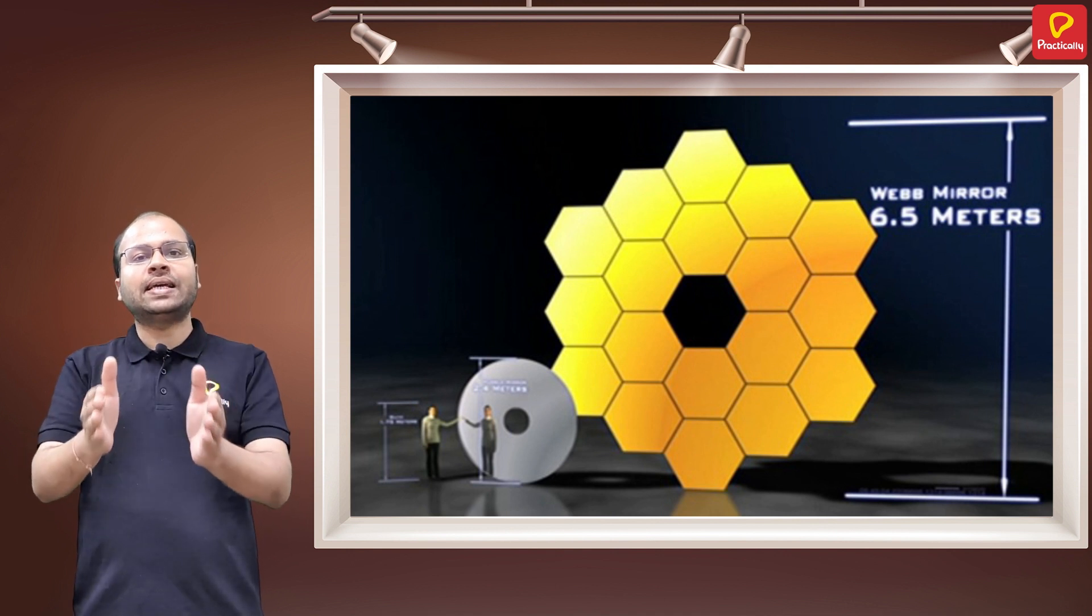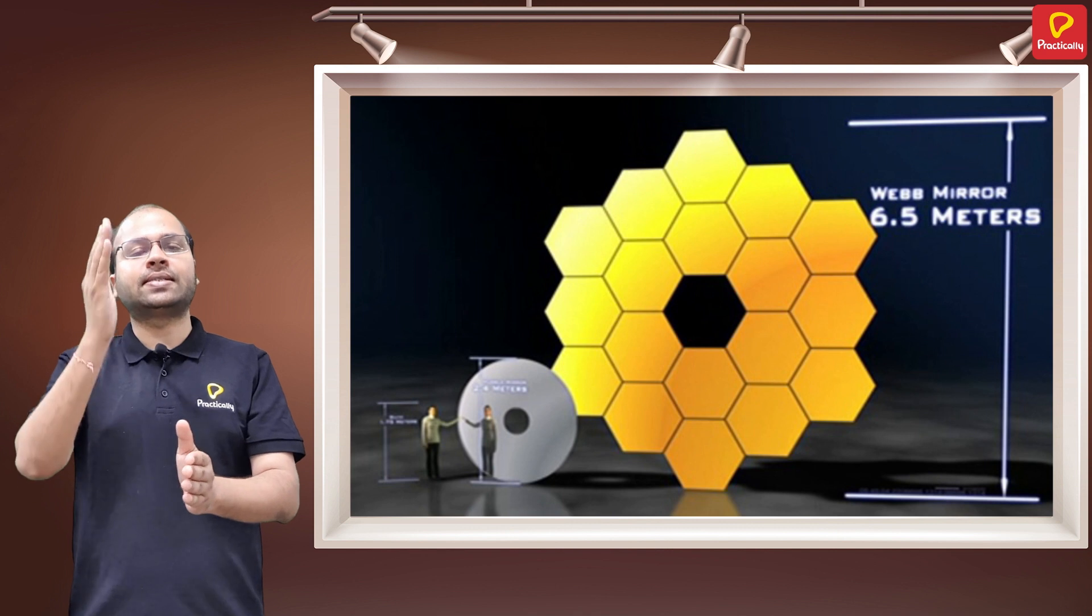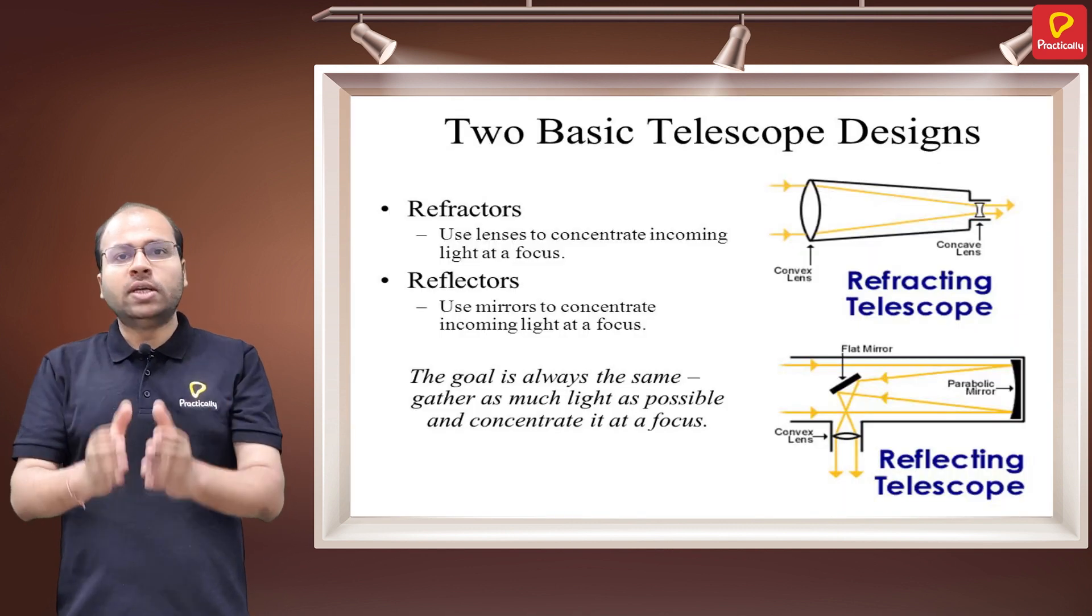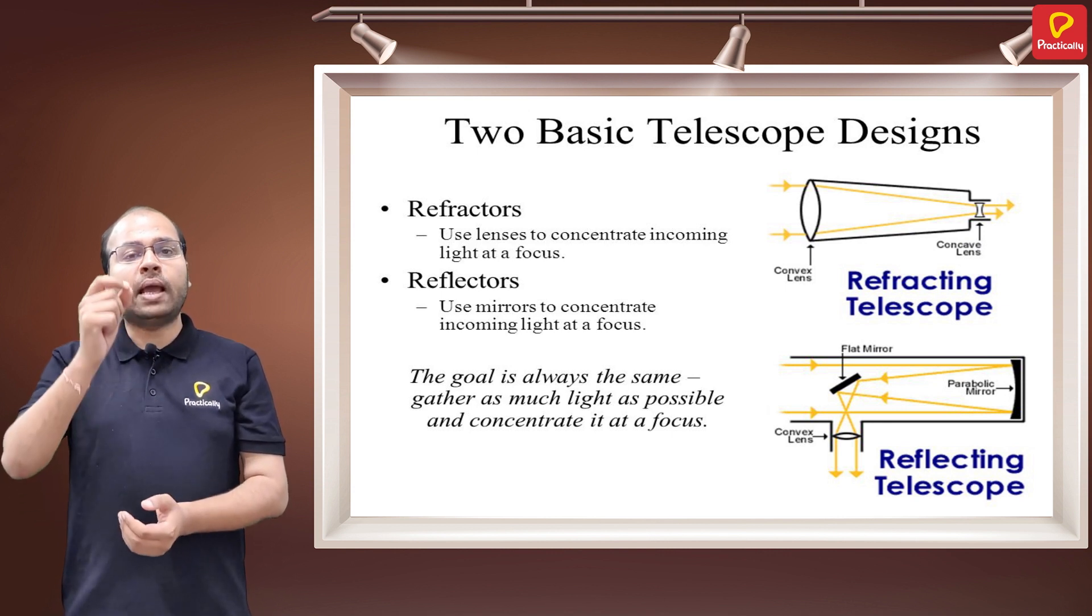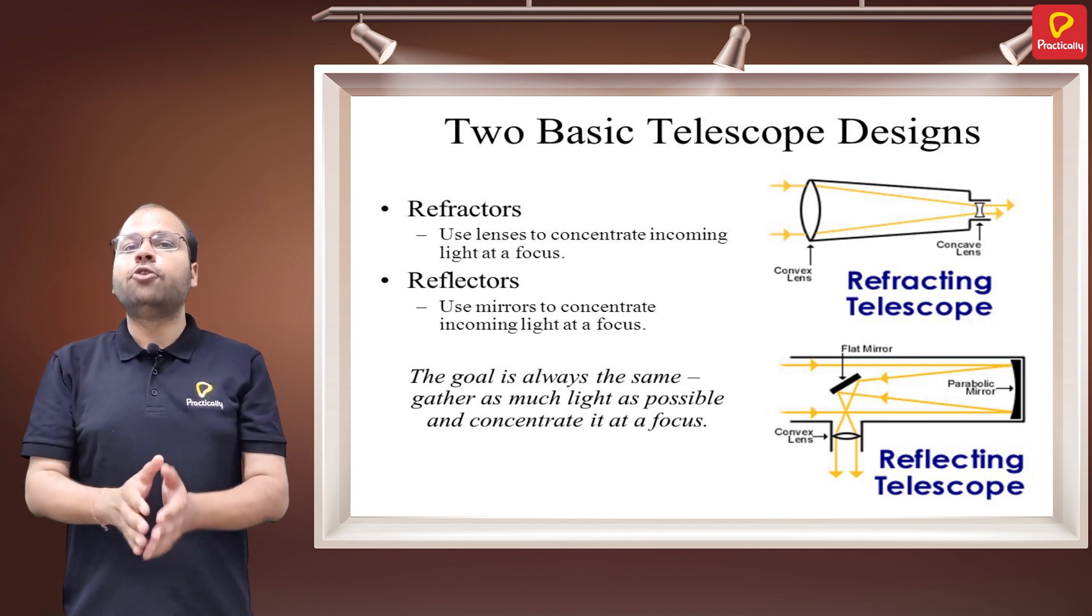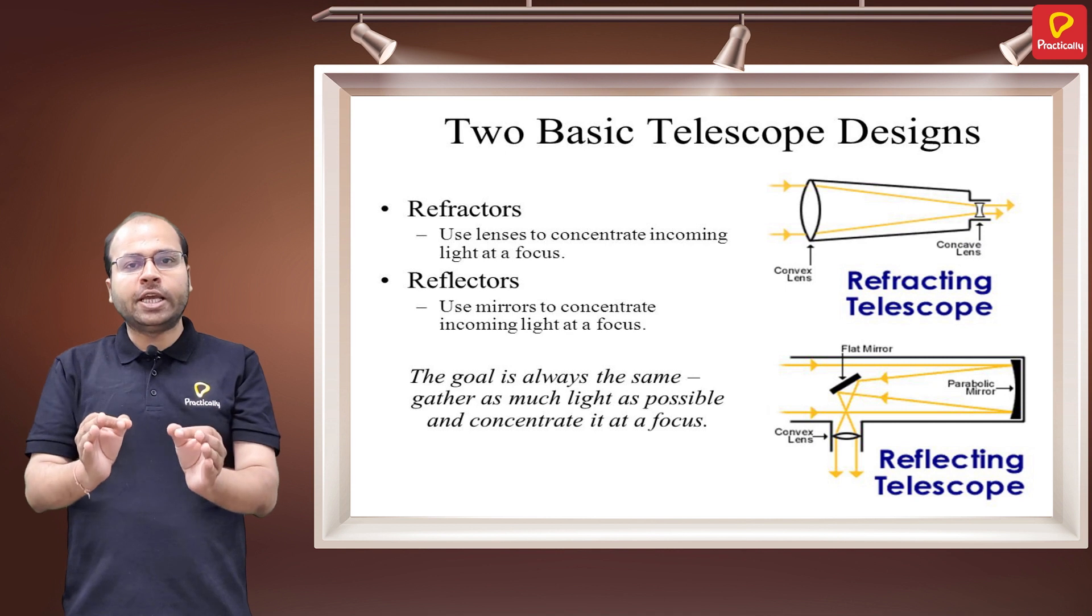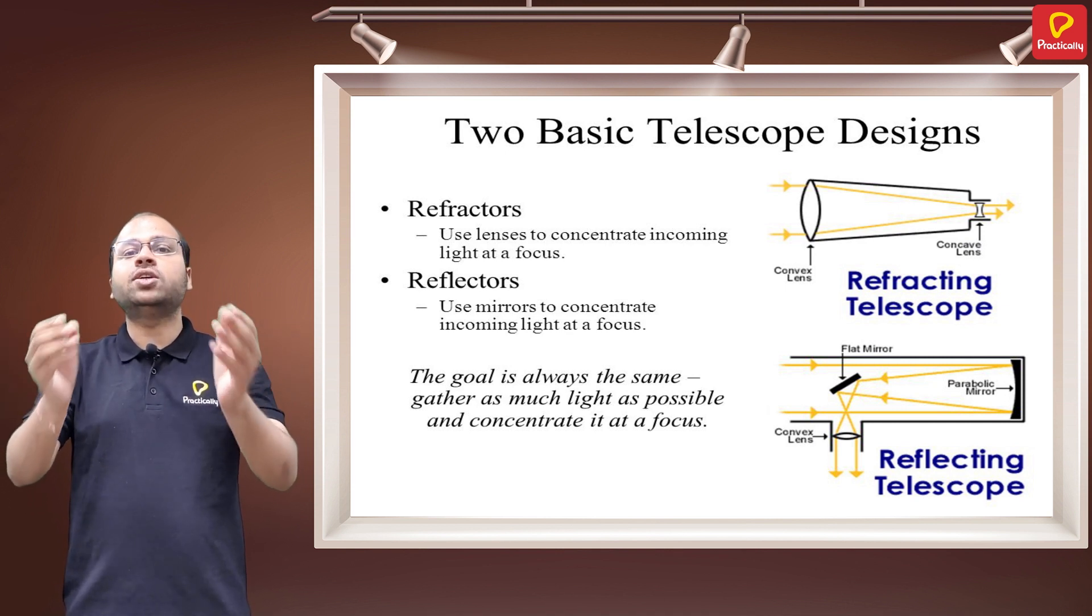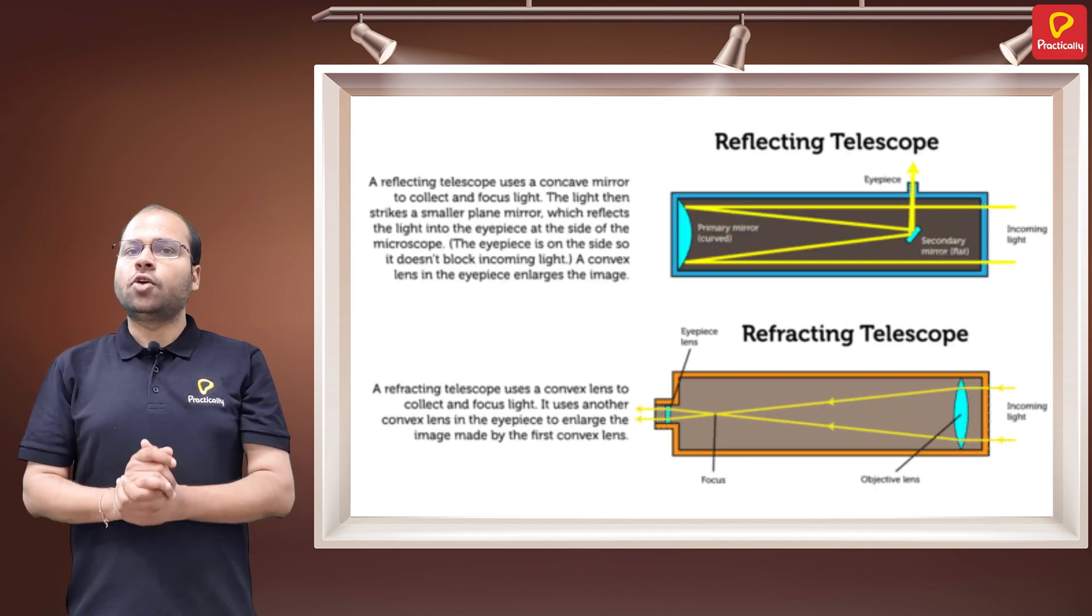It is designed in such a way that its light collecting area is six times that of its predecessor, the Hubble Space Telescope. So these are the principles from school science that have been applied to produce high-resolution images from James Webb Space Telescope that are free from any kind of optical aberrations or deviations.